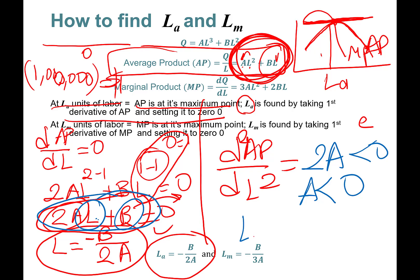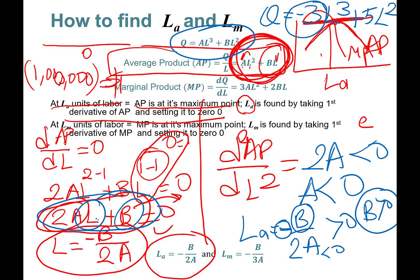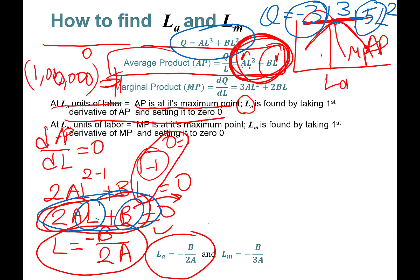For 2a to be negative, a must be a negative number. And for LA = -b / 2a to be positive: negative divided by negative a gives a positive, so b must be positive. That's a restriction on the functional form. For example, Q = -3L³ + 5L² works because a is negative and b is positive.